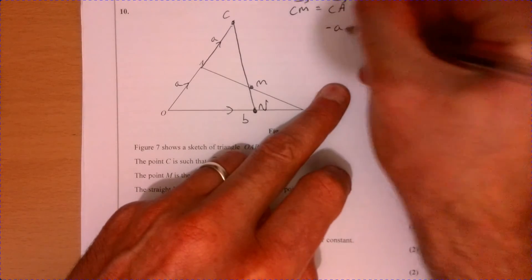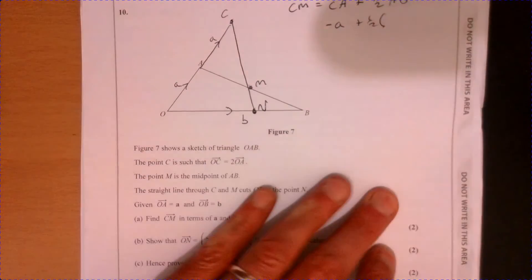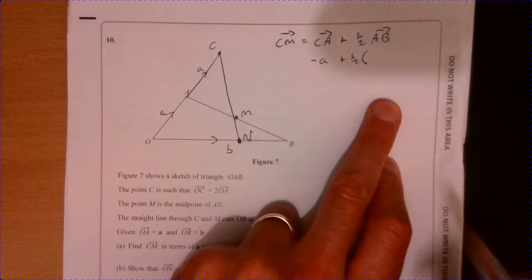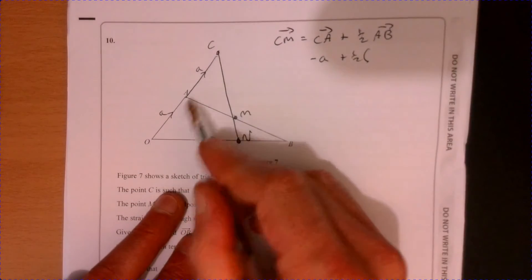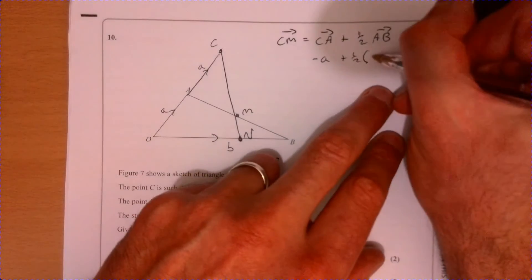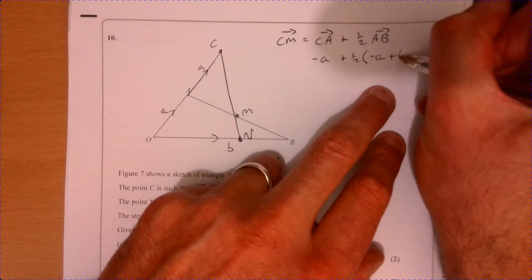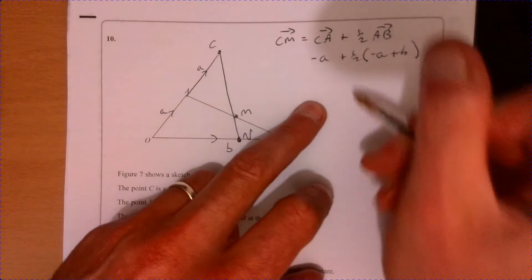So CA is minus a, and then we've got plus half. AB is minus a plus b, so minus a plus b.